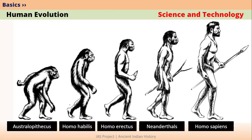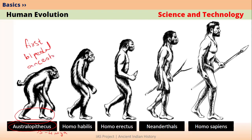Let's look at how human evolution has taken place over the years. Almost 3 to 4 million years ago, there was a species of Australopithecus — its full name is Australopithecus afarensis. Australopithecus was the first ancestor of humans to walk on 2 feet, and therefore it is called the first bipedal ancestor of humans.